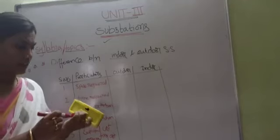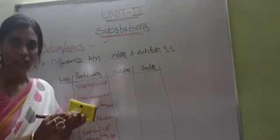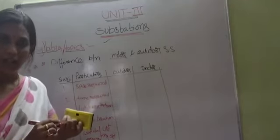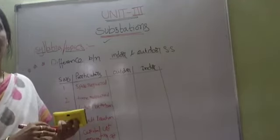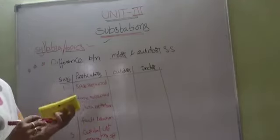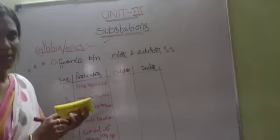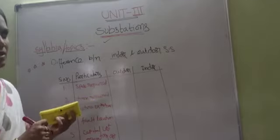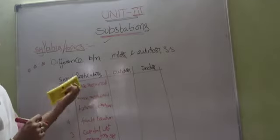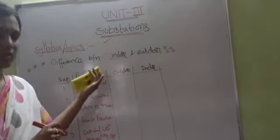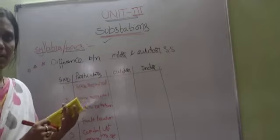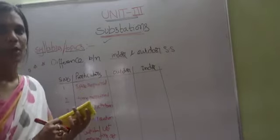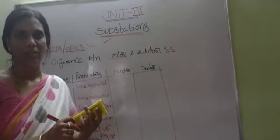These are the classifications based on constructional features of substations. Based on constructional features, there are mainly four types: indoor substation, outdoor substation, underground substation, and pole-mounted substation.